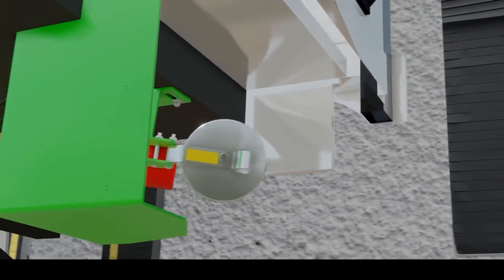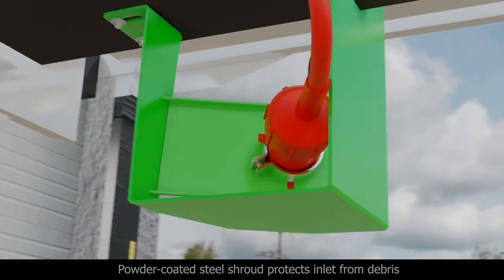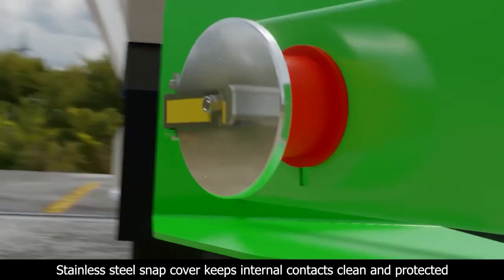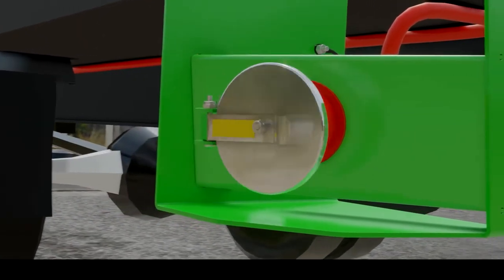ESL's truck trailer kit incorporates a powder coated steel shroud which protects the inlet from debris during transit. The self-closing stainless steel snap cover also keeps internal contacts clean and protected while not in use.